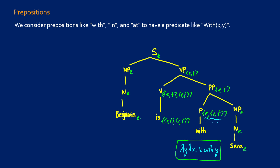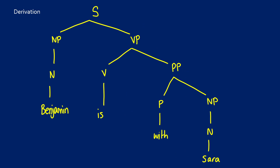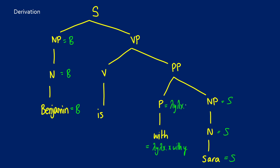Let's see how this works in the actual derivation for 'Benjamin is with Sarah'. Sarah is going to be s, passing up the tree. Benjamin is going to be b, passing up the tree. 'With' is going to be lambda y lambda x dot x with y, and this passes up the tree. For the prepositional phrase, we take lambda y lambda x dot x with y and apply Sarah to it — so every place there's a y, we replace it with s — and now we have lambda x dot x with s.